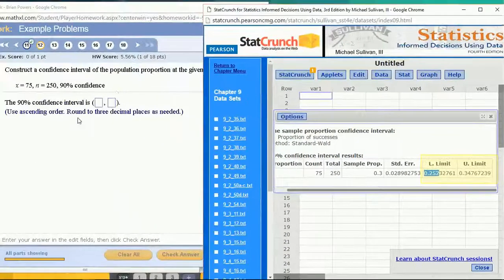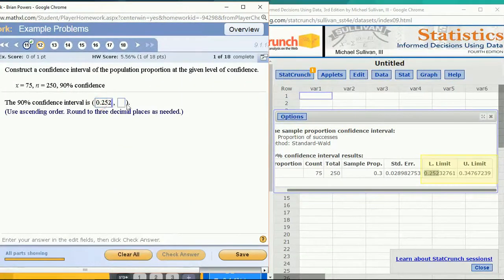We've got 0.252 and 0.348 rounded up. So what we would say is we're 90 percent confident that the true population proportion is between 0.252 and 0.348.